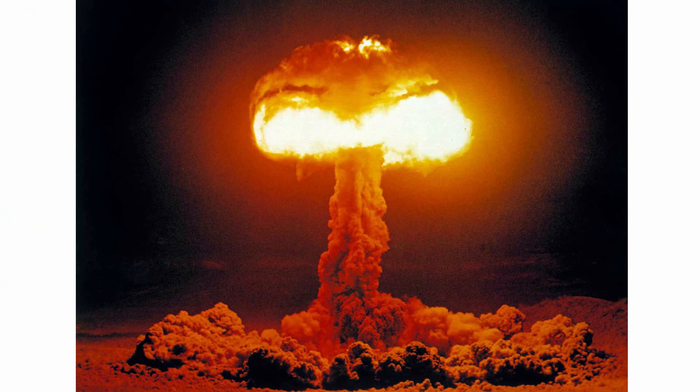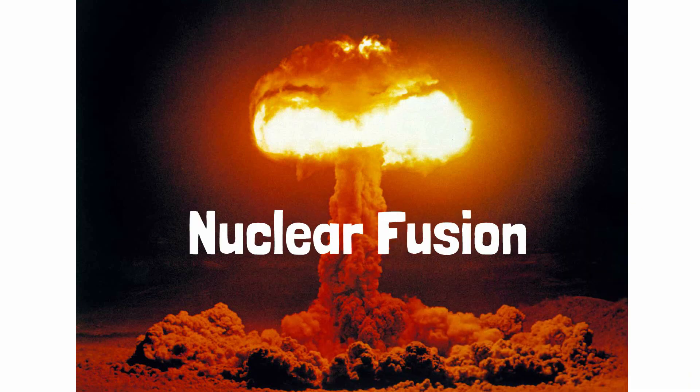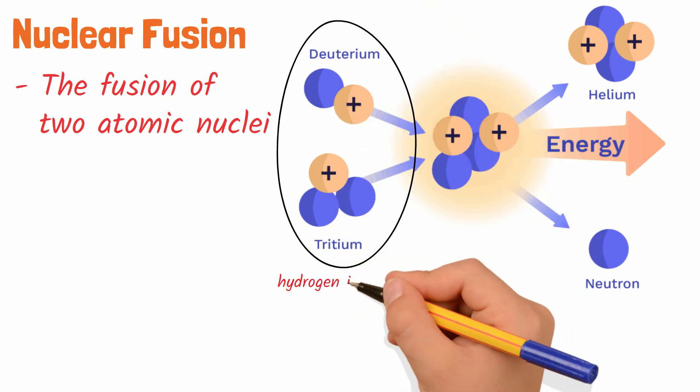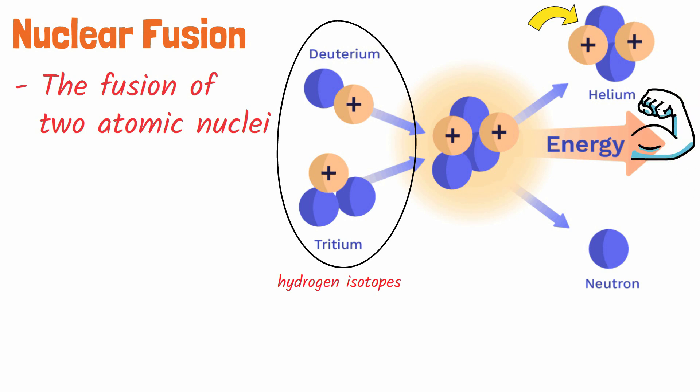This last example is particularly relevant because hydrogen bombs and the Sun both use the same process, nuclear fusion, to produce their energy. Nuclear fusion, as the name implies, is the fusion of two atomic nuclei. The most common form of nuclear fusion is when two hydrogen isotopes come together to create a helium atom. The combination of the two hydrogen nuclei to create a helium atom releases radiant energy, and this is the source of the Sun's energy.